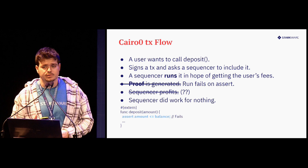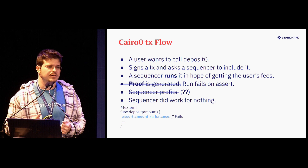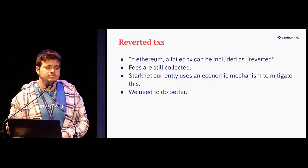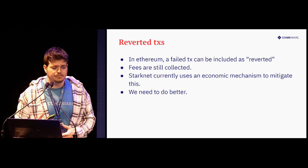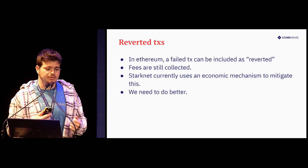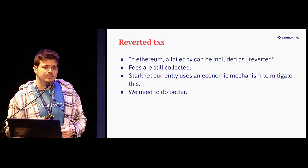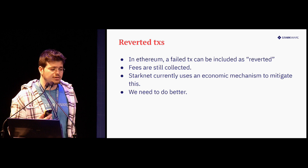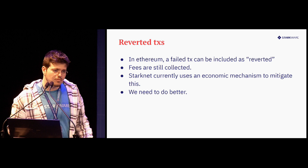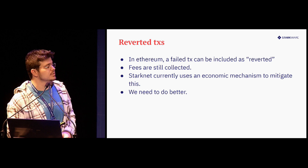But what happens here is that the sequencer did work for nothing, which is a problem — it's some sort of denial of service vector. Today in StarkNet we deal with it using some kind of economic mechanism, but we can do better. In Ethereum, for example, a failed transaction is actually included in a block as reverted, which means state changes don't happen but fee collection still happens. We would like to have something similar in StarkNet.